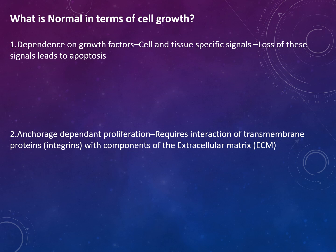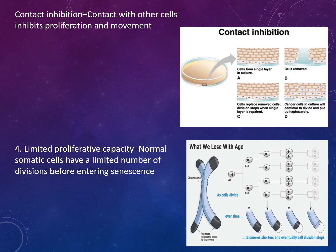What is normal in terms of cell growth? Cells depend on growth factors, and loss of these signals leads to apoptosis, known as programmed cell death. There's also anchorage-dependent proliferation, requiring interaction of transmembrane proteins such as integrins with components of the extracellular matrix. There's also contact inhibition, where contact with other cells inhibits proliferation and movement. Normal somatic cells also have a limited number of divisions before entering senescence.